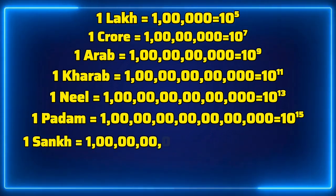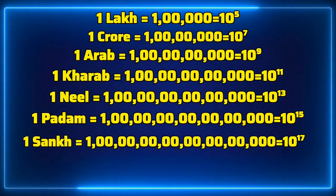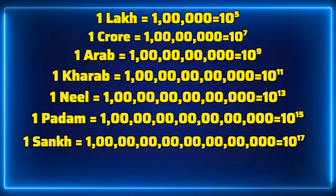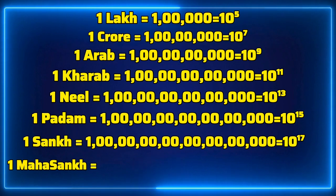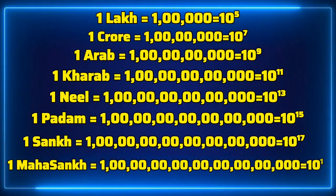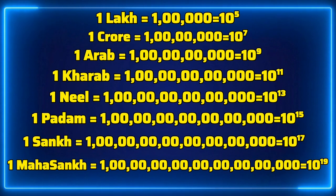One Shank is equal to two more zeros than Padma, giving seventeen zeros — 10 to the power 17. Then one Maha Shank has two more zeros, that is nineteen zeros — 10 to the power 19.